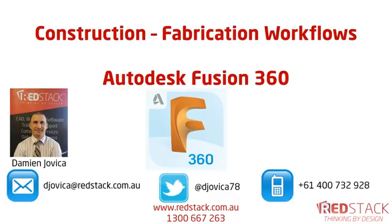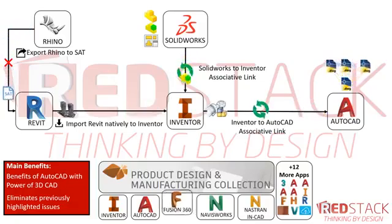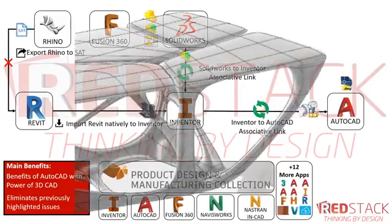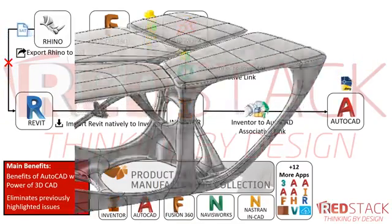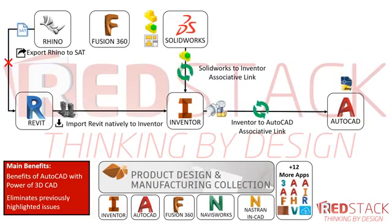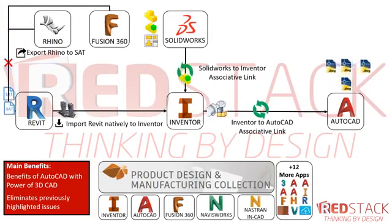So the main benefits are getting the power of 3D with the power of AutoCAD, eliminating the previously highlighted issues. Let's enhance this workflow now and see what happens when we put Fusion 360 in the mix. Fusion 360 is the first cloud-based CAD modeler available on PC and Mac, with very powerful surfacing tools. It uses NURBS and T-Splines, so it's very similar to Rhino. It has the same limitation as Rhino in terms of going into Revit — you've got to export it to a SAT file.